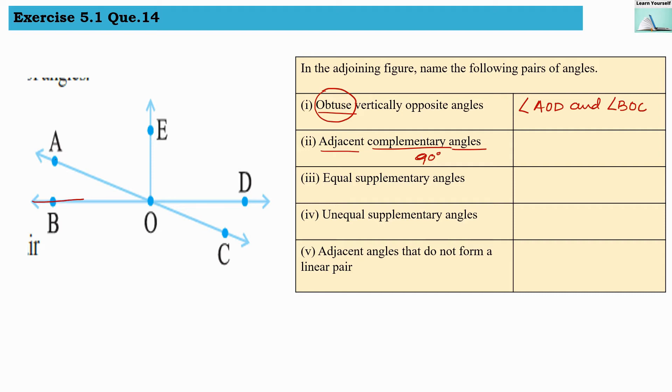If we are talking about these angles, they are adjacent as well as the addition of their measures will give us 90 degrees. This angle, that is angle BOA, and the other angle, angle AOE. So these two angles are complementary as well as they are adjacent to each other.